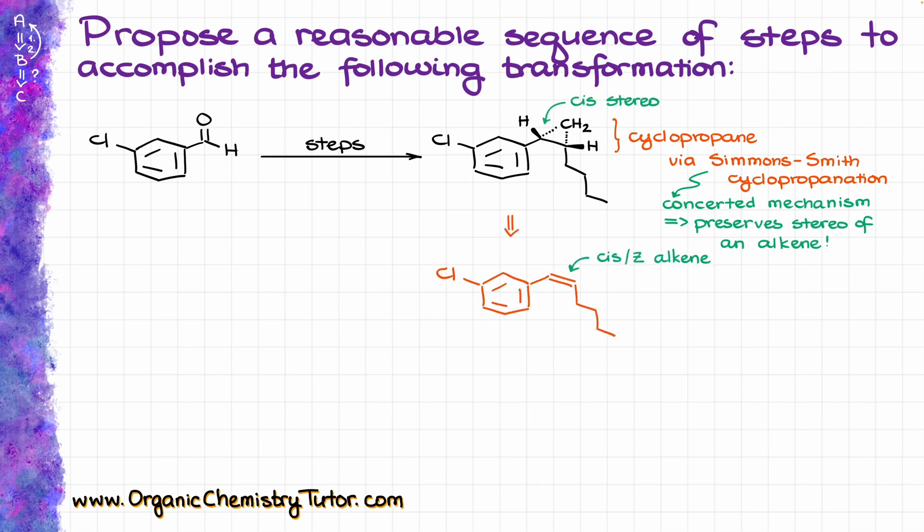That makes it a little bit easier for us to figure out what sort of alkene is our predecessor. Since our cyclopropane has a cis stereochemistry in our final product, that does mean that our alkene must also be a cis, or Z, alkene. So my next question is going to be: how are we going to make our Z alkene?